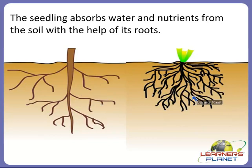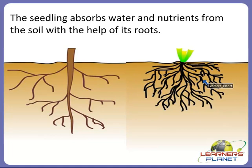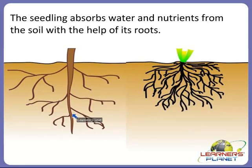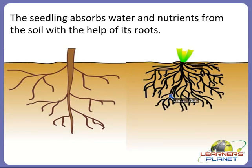Children, do you remember roots? There are two types of roots: tap root, which consists of one main root, and fibrous roots, which have more than one main root. Roots absorb water and nutrients from the soil and provide them to the seedling or baby plant. When the seedling absorbs water and nutrients from the soil with the help of roots, it grows into a new big plant. Roots act as a medium for seeds to grow into a new plant.